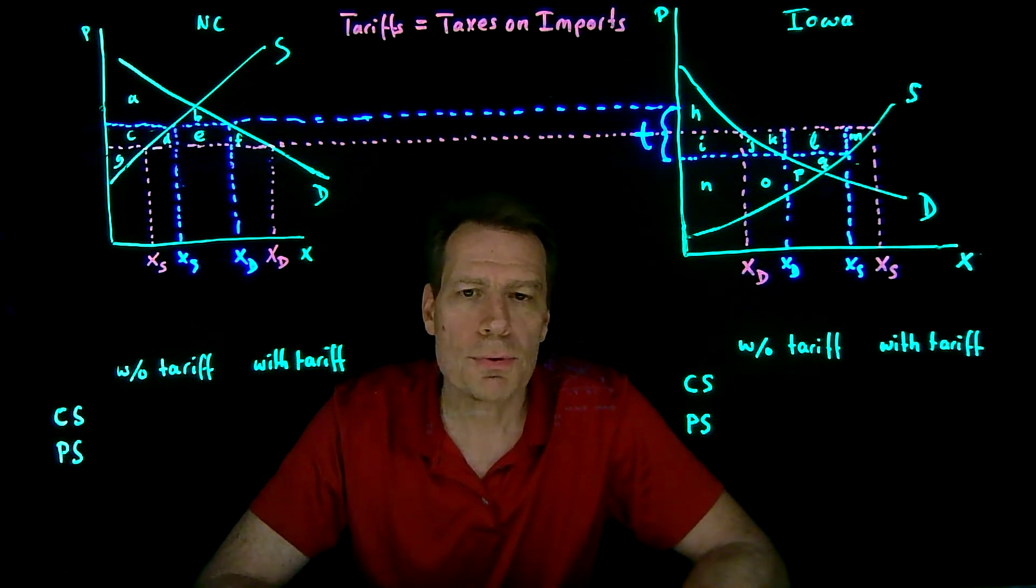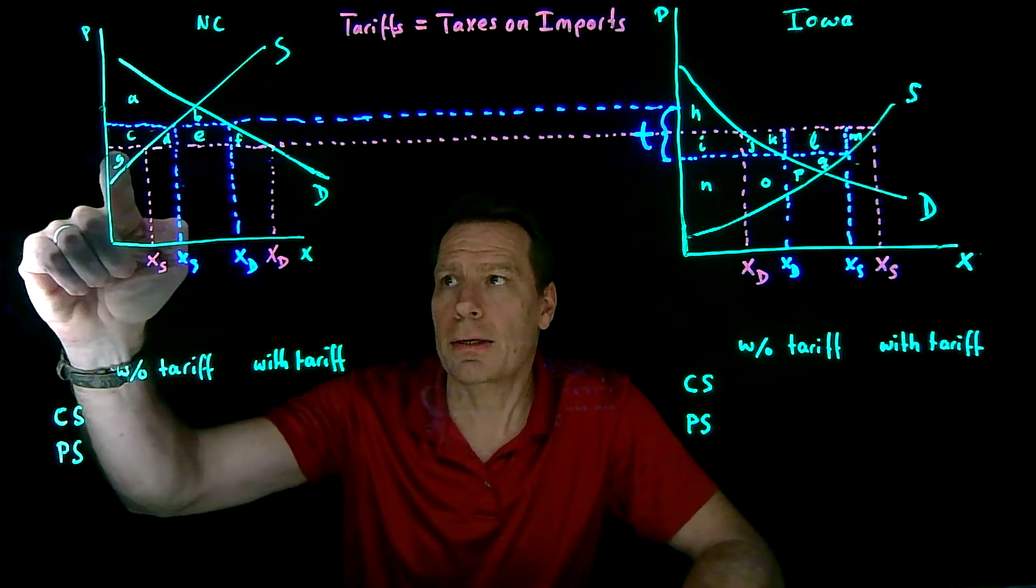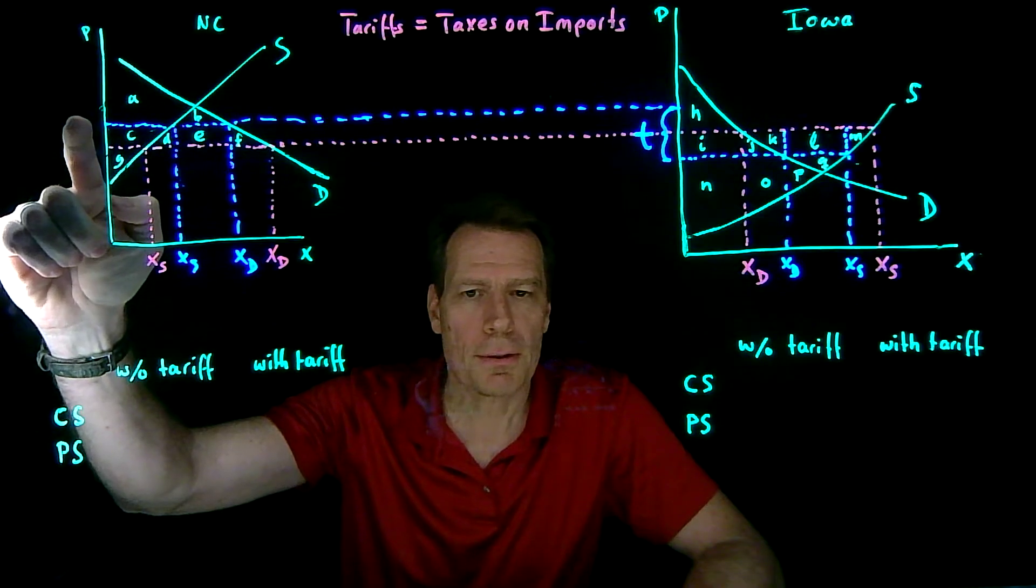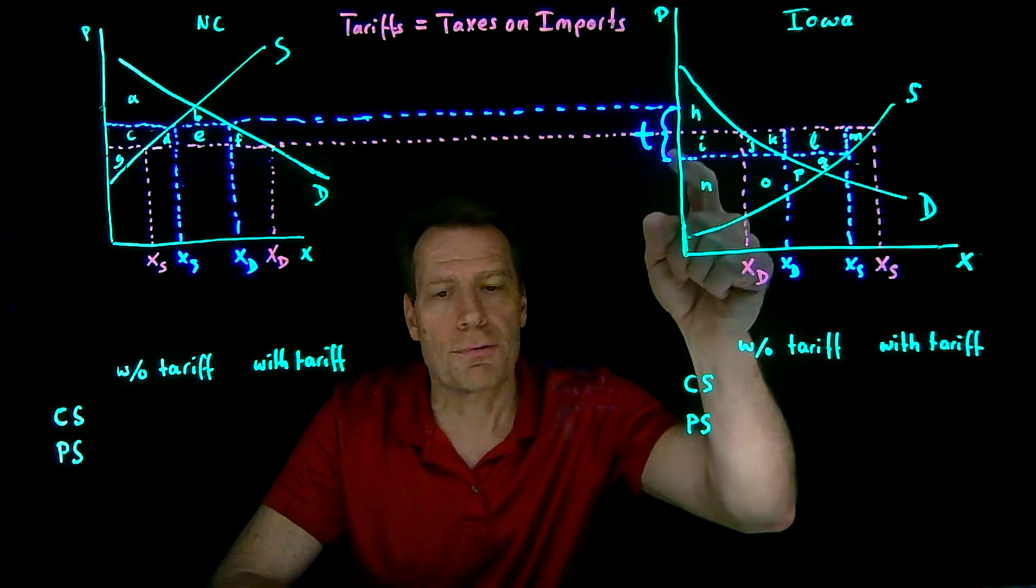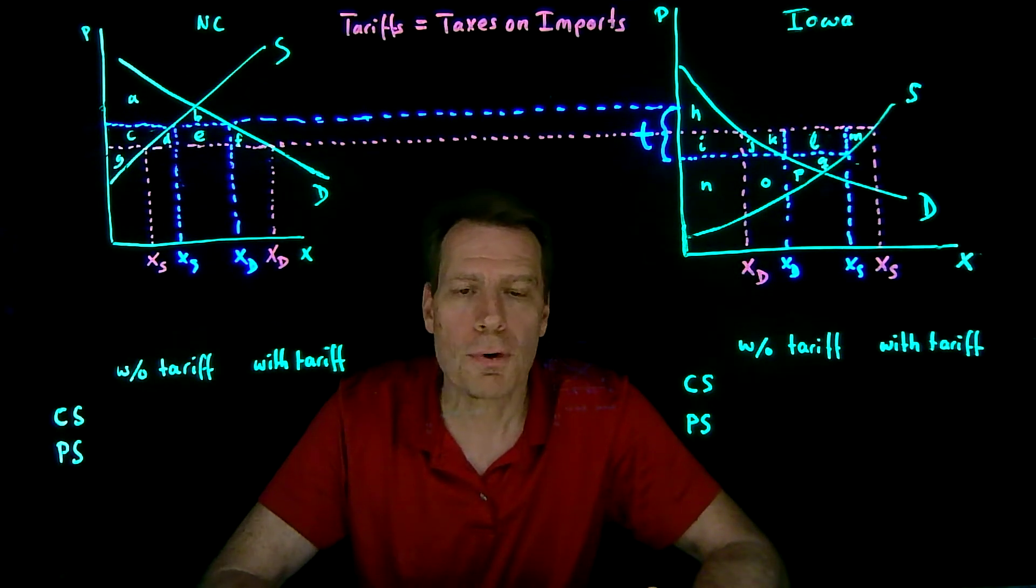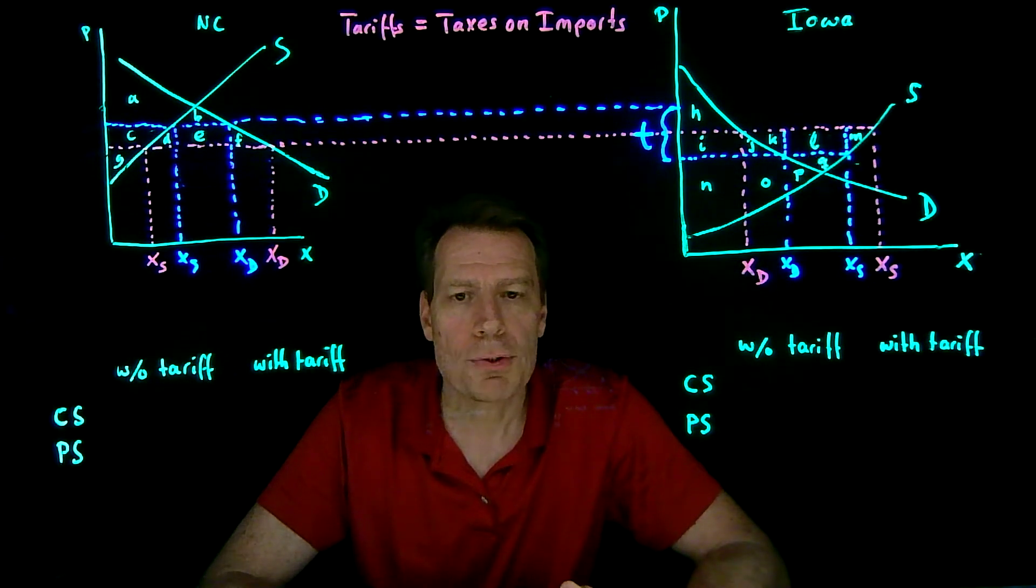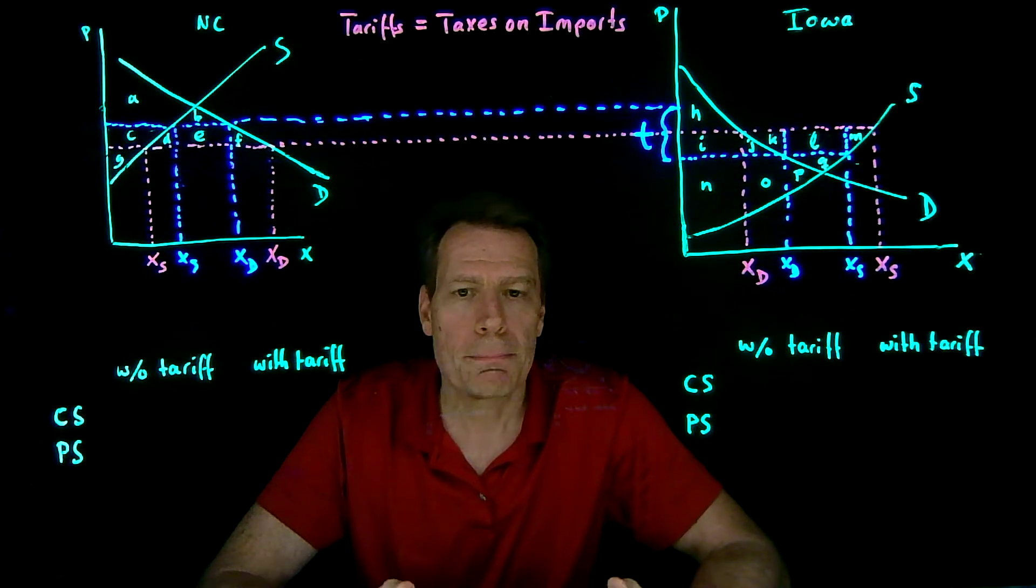And we can already see who's gonna win and who's gonna lose from such a tariff. In North Carolina, the price rises, so that's bad for North Carolina consumers, it's good for North Carolina firms. In Iowa, the price falls, which is bad for Iowa firms but good for Iowa consumers. But the bigger question is what happens to overall surplus? Are the winnings bigger or smaller than the losses from the tariff?